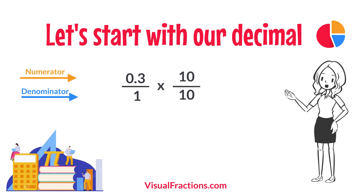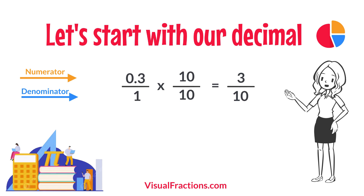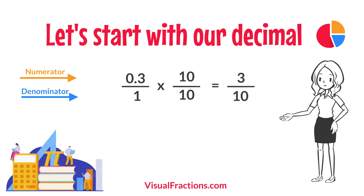So, 0.3 times 10 gives us 3, and 1 times 10 gives us 10. This translates 0.3 to the fraction 3 over 10.